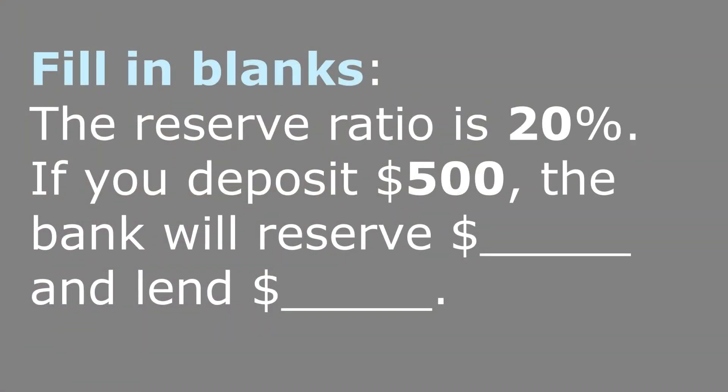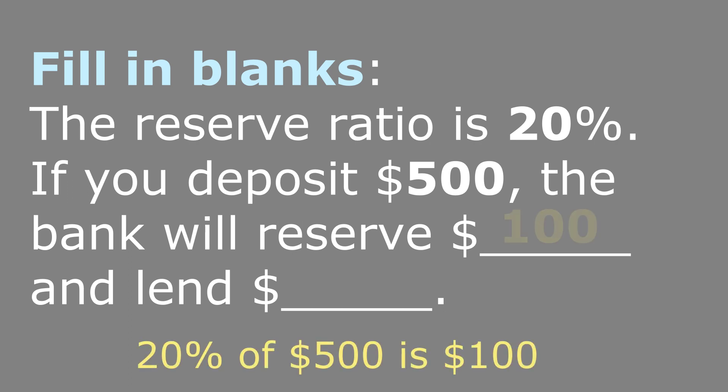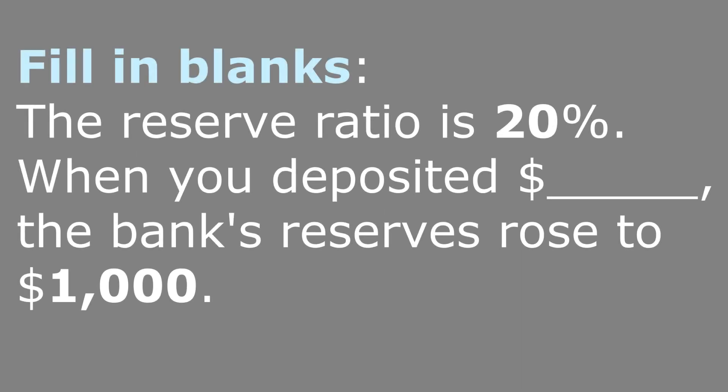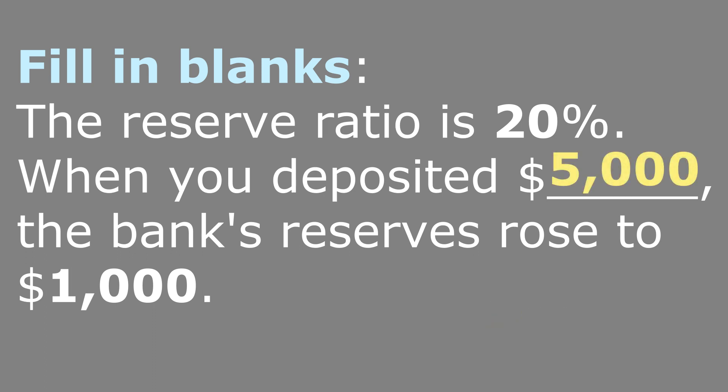First, a simple problem: the reserve ratio is 20%; if you deposit $500, how much will the bank reserve and how much will it lend? The bank will reserve 20% of $500, which is $100, and it will lend the rest. Now a slightly more difficult problem: the reserve ratio is 20%, and we don't know how much you deposited, but the bank reserves rose to $1,000. How much did you deposit? Recall the formula: reserve ratio equals reserves over deposits. Plug in the numbers, solve the equation, and the answer is $5,000.